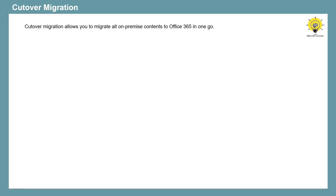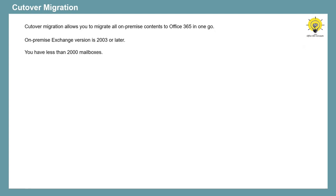Cutover migration is the simplest migration type to implement. Using cutover migration, you can migrate all your mailboxes, groups, contacts, and calendars to Office 365 in one go. You can perform cutover migration if your on-premise Exchange Server version is 2003 or later, and you have less than 2000 mailboxes.